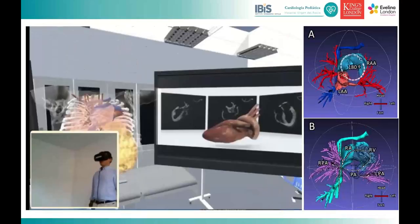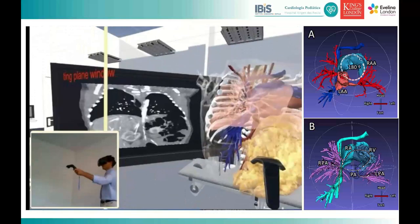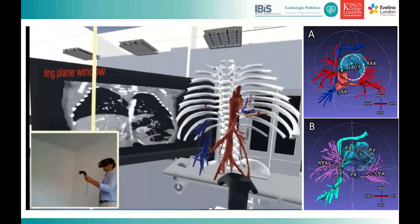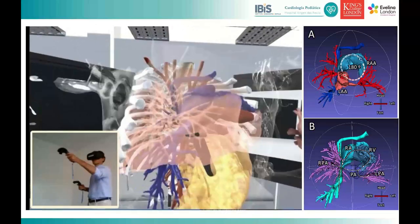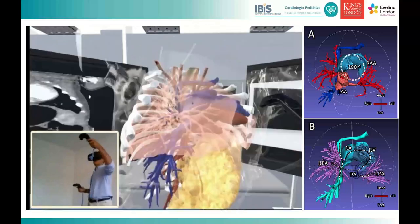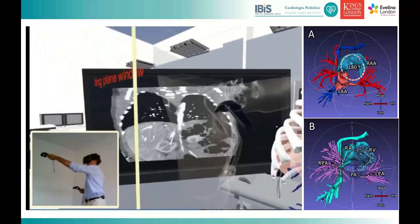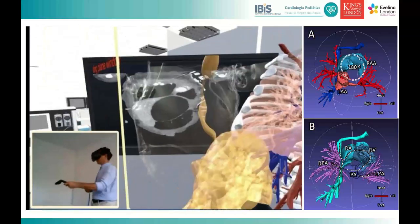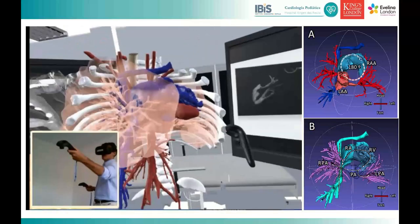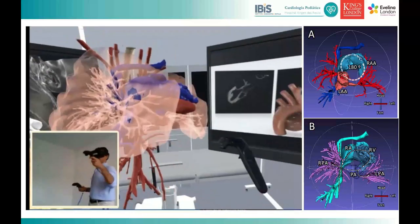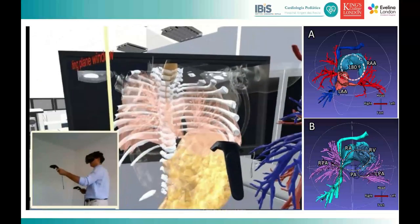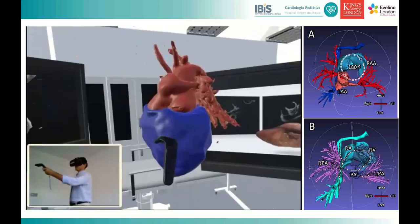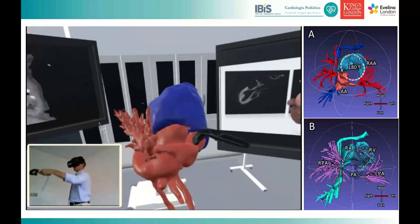Now we have improved the virtual theater. In your virtual reality world, you have a screen with the CT, and you can have different segmented anatomical structures: the skin, airway, heart, lungs, guts, and esophagus. It's really useful not only for surgeons, but also for trainees, because it's a cheap device — around $300 — and you can interact with the heart as much as you want.